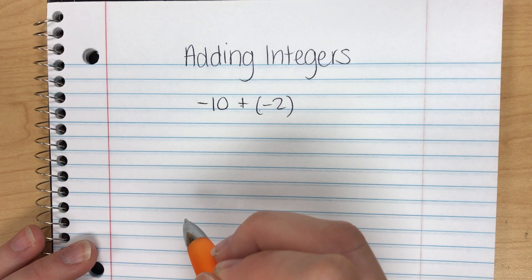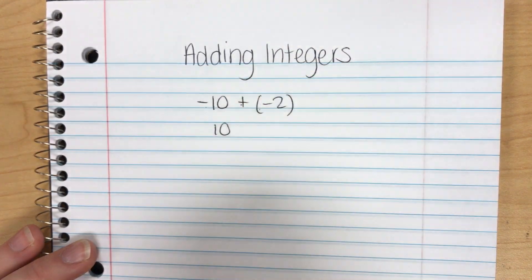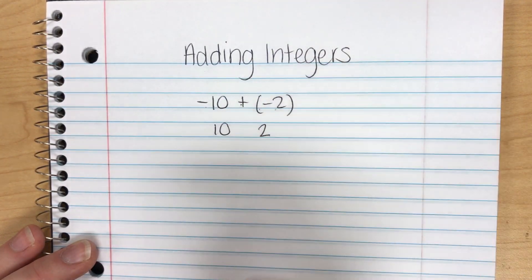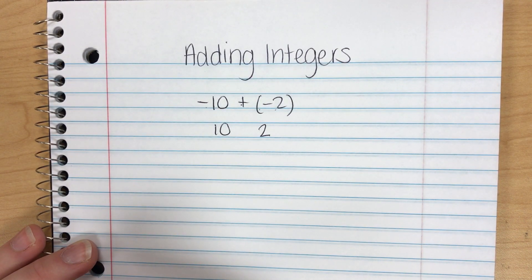Remember absolute value is the distance of a number from zero. So negative 10 is 10 steps from zero. Negative 2 is 2 steps from zero. Remember you will never have a negative absolute value.